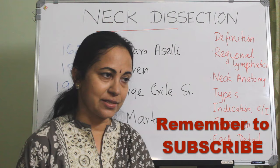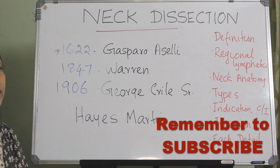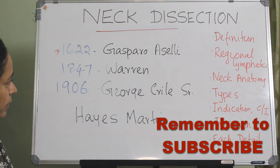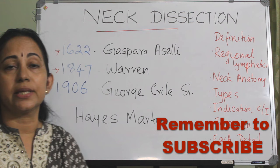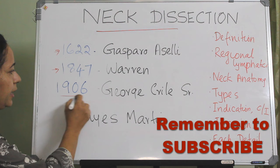Going to the history of neck dissection: it was Gasparo SLE in 1622 who described lacteal vessels, indicating the presence of a lymphatic system. In 1847, Warren described an operative technique for the removal of metastatic lymph nodes. But it was George Kreil Sr. in 1906 who gave a very standardized technique for the removal of neck nodes.